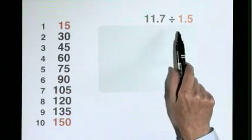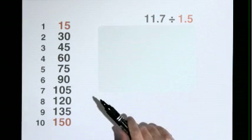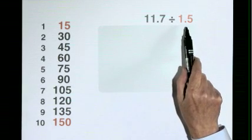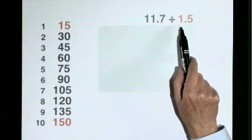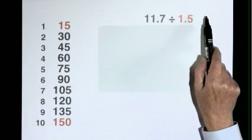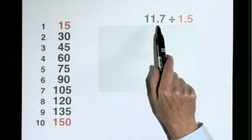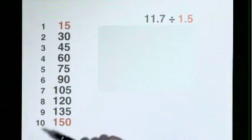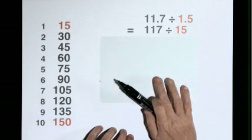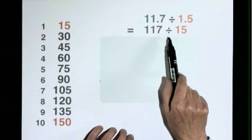11.7 divided by 1.5. Best to divide by a whole number. So why not make the 1.5 into 15 by multiplying by 10, but then we also have to multiply this number by 10. So the best sum to do would be 117 divided by 15.